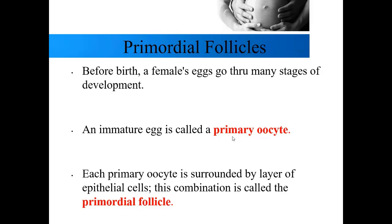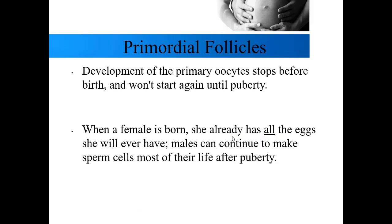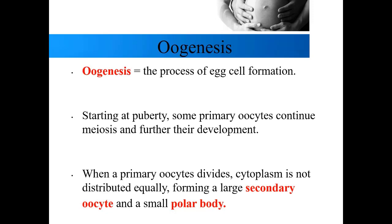Development of the primary oocytes is put on pause just before the female is born and won't resume until she goes through puberty. For a long time it was thought that females are born with all the eggs they'll ever have, while males continue making sperm through most of adult life. However, some recent research suggests females may be able to continue making eggs throughout their life, so that first statement may or may not remain true depending on whether current research is confirmed.